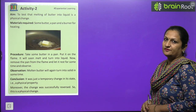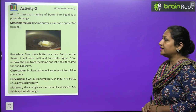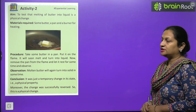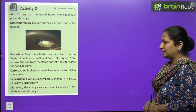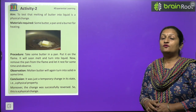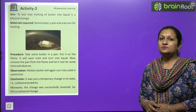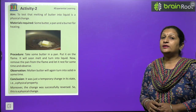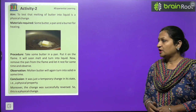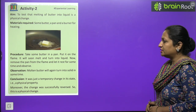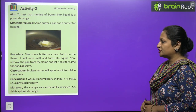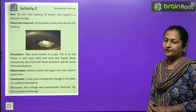Activity: Testing that melting butter into liquid is a physical change. Take some butter in a pan and put it on a flame - it will melt and turn into liquid. Remove the pan from the flame and let it rest. The liquid butter will again solidify. Butter changed state from solid to liquid on heating, but cooled back to its original state. This was a temporary change in its physical state and it was successfully reversed - so it is a physical change.